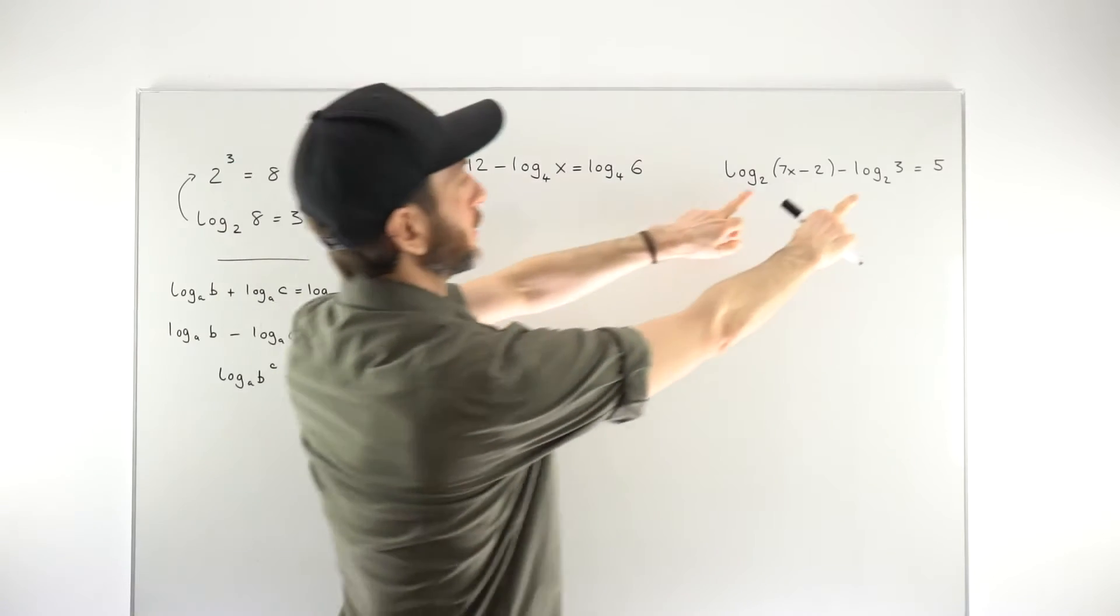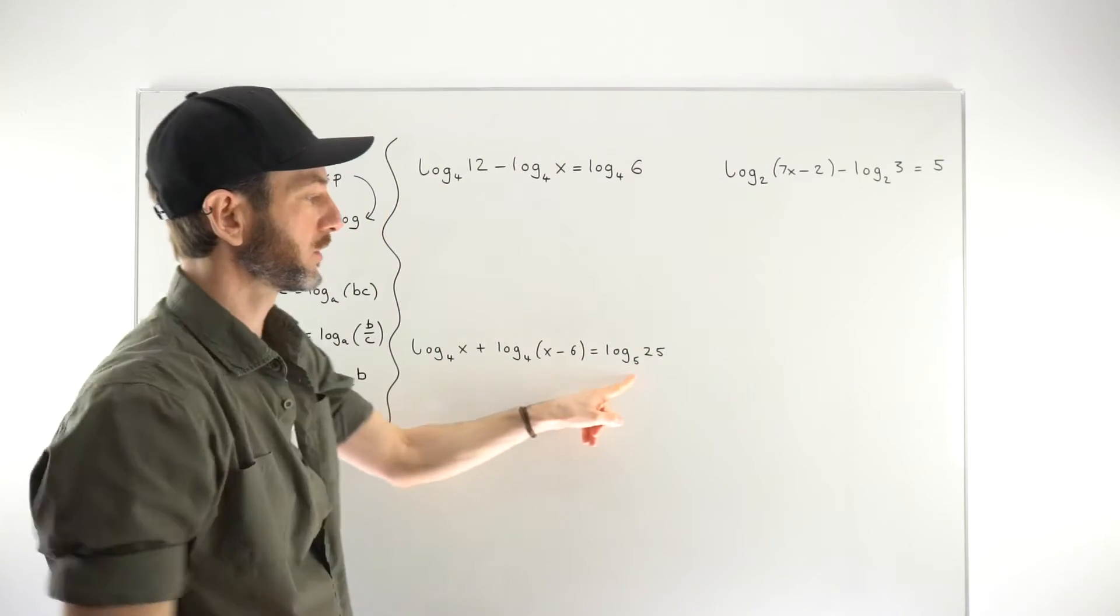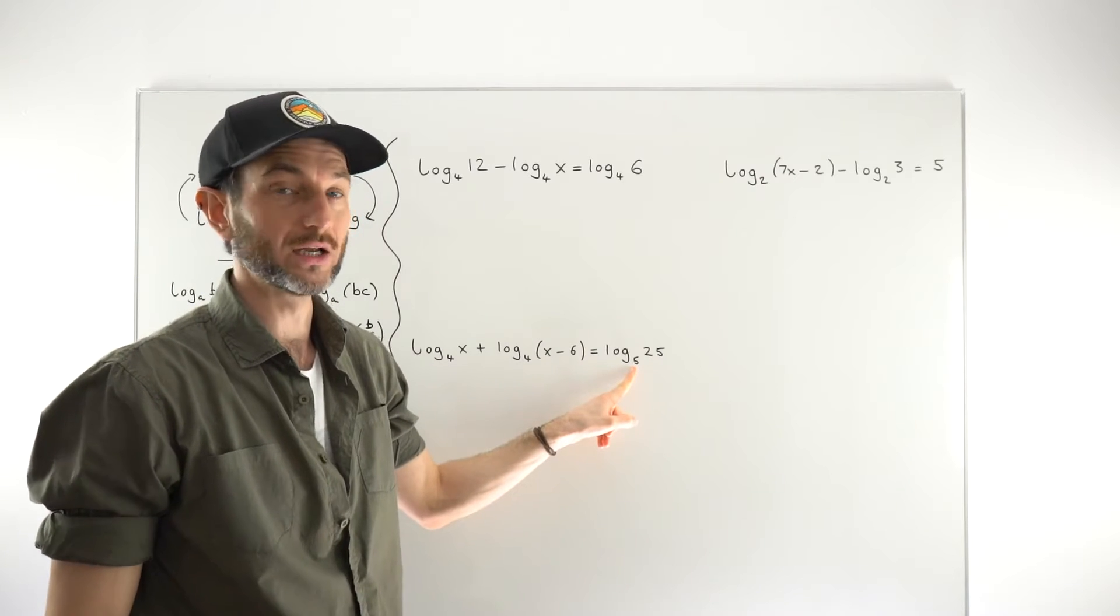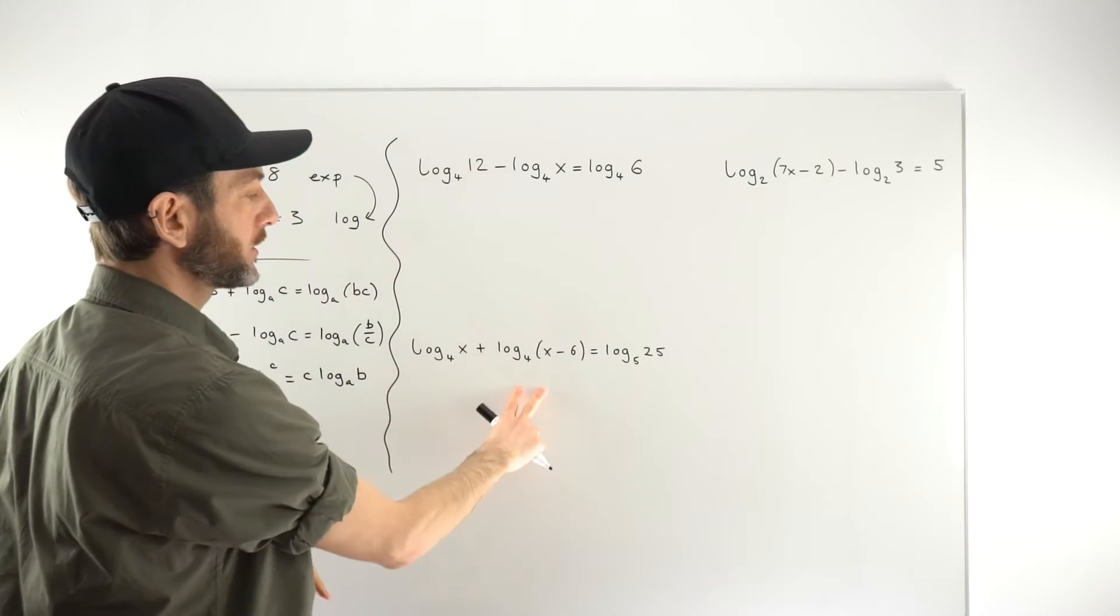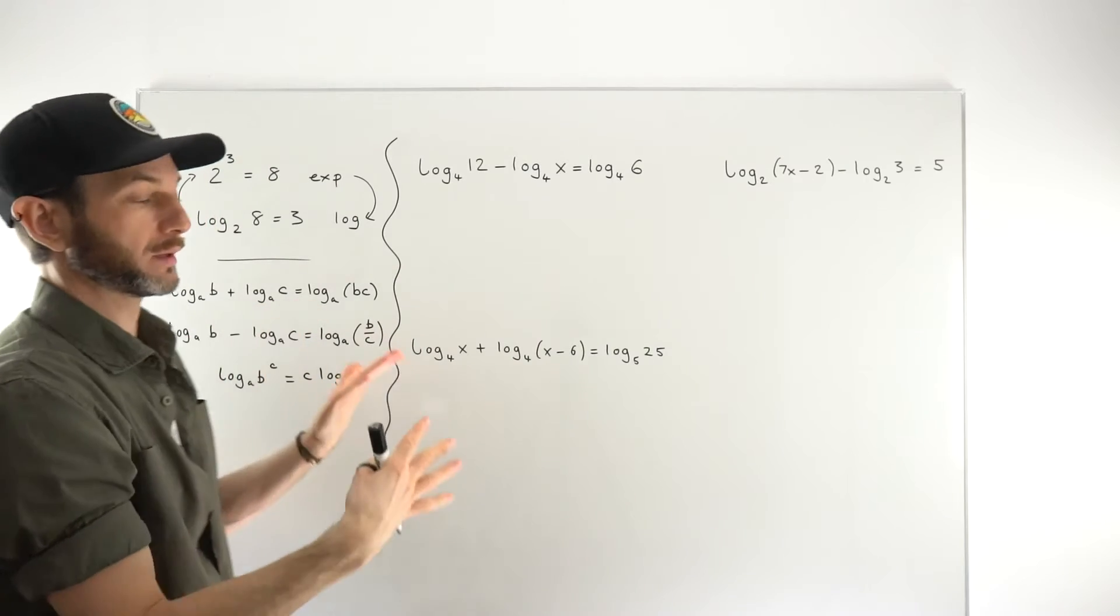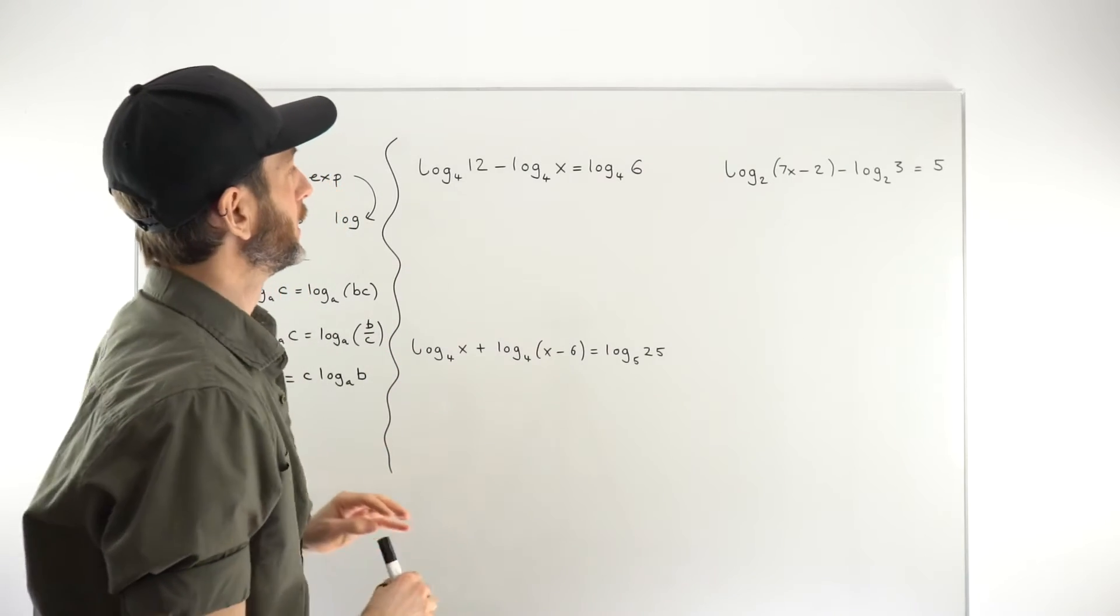That's fine there. That's fine. This is also fine. But notice there is a different base number over here. So you couldn't combine this term with one of these using one of these rules. So there's going to be a different approach to that one.